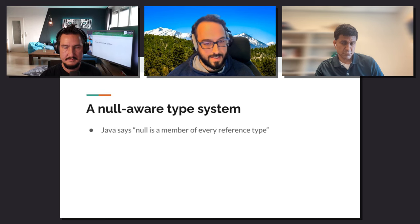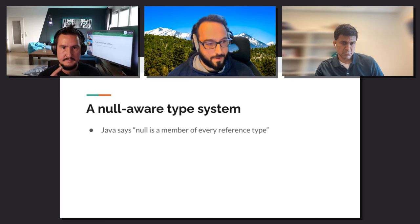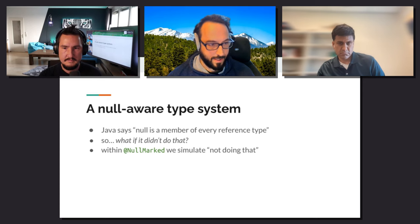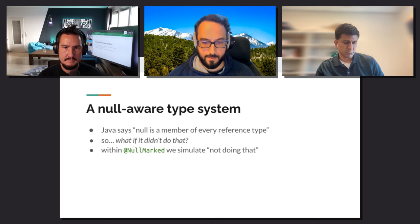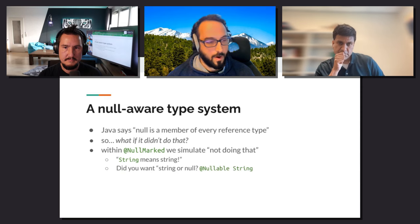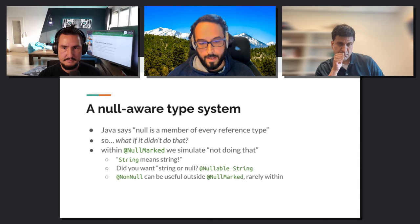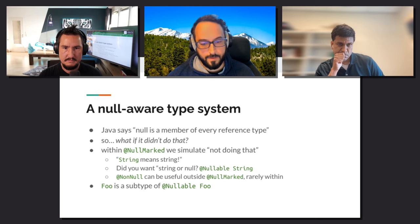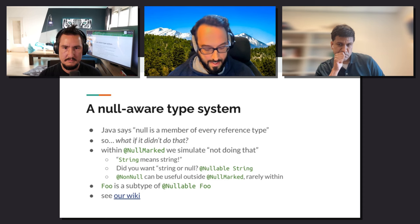What we're doing — and what the other languages have done — is extending the type system. Only with annotations, we're sort of faking extending the type system because we're not changing it for real. But conceptually, we're saying: Java says that null is automatically a member of every reference type. But when you use NullMarked on your code, we simulate Java not automatically adding null onto every reference type. So String means an actual string with zero or more characters, and if you wanted a String or null, then you will ask for it. And in this relationship, Foo naturally becomes a subtype of Nullable Foo. So wherever the Java language specification talks about subtyping, we apply our nullness-specific rules in those same situations.